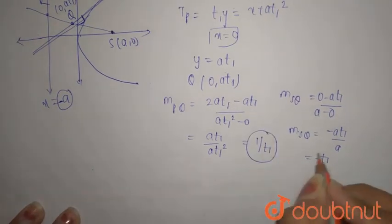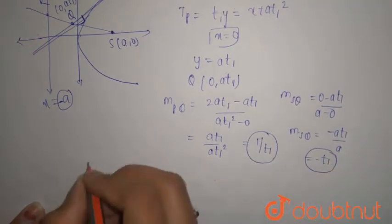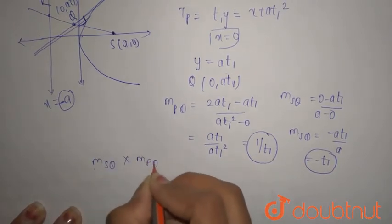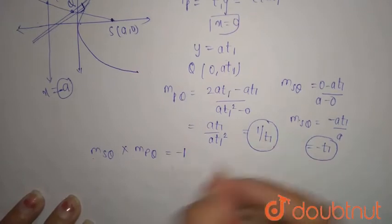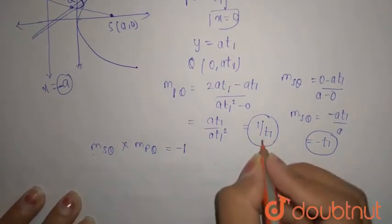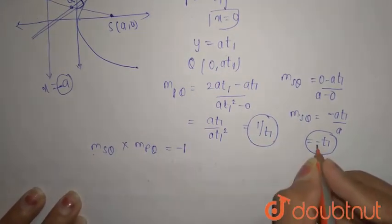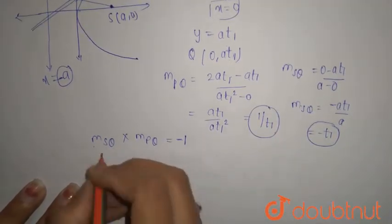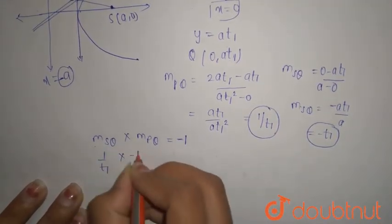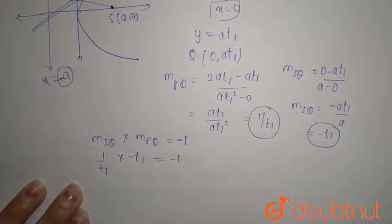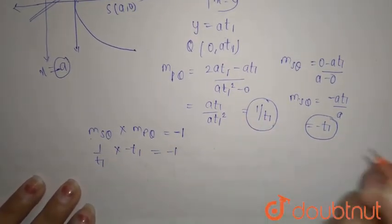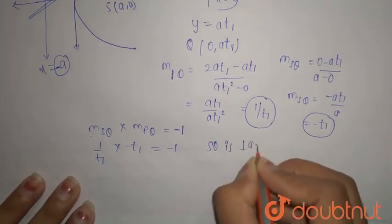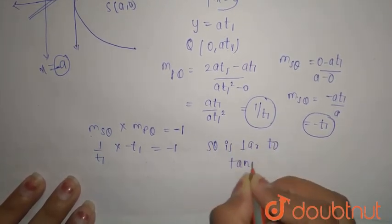Now, m_SQ × m_PQ equals (−t₁) × (1/t₁) = −1. The product of the slopes is −1, so SQ is perpendicular to the tangent. This is exactly what we needed to prove. Hence proved.